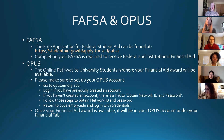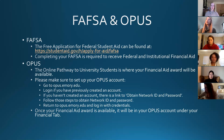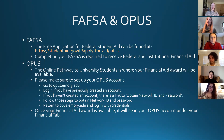The other thing is OPUS. OPUS is the Online Pathway to University Students — the portal where your financial aid will live, as well as other university items such as your social security number. All of your information lives in your OPUS account, so make sure that account is set up because that is where you will see all of your financial aid information. To access it, go to opus.emory.edu.